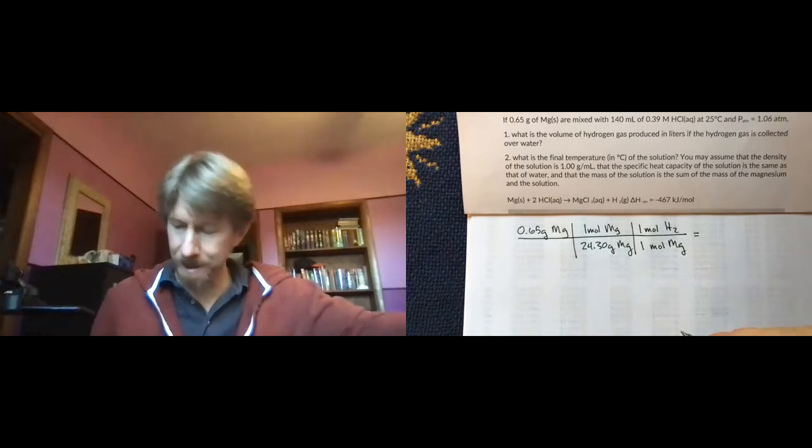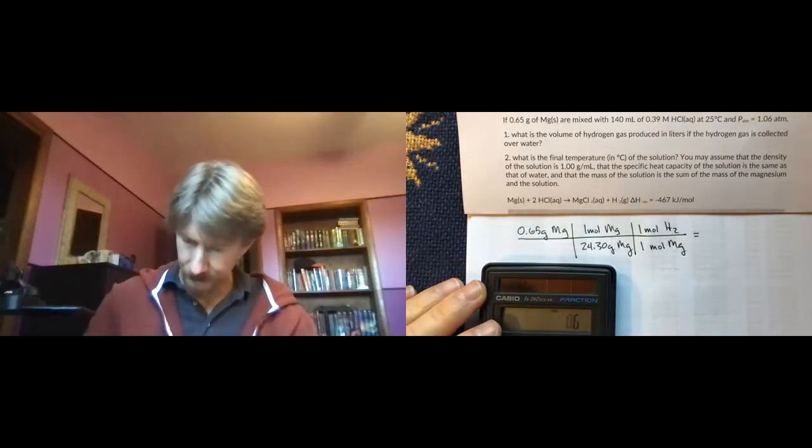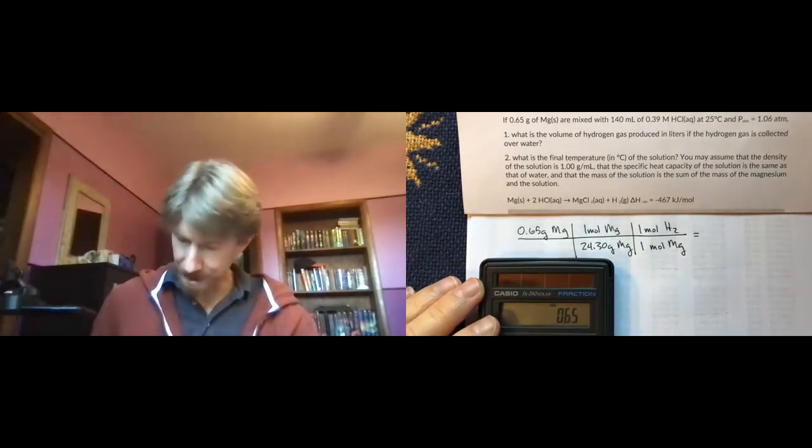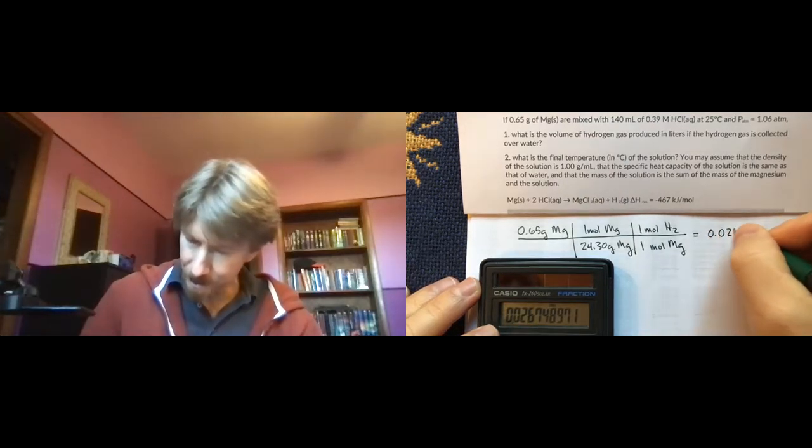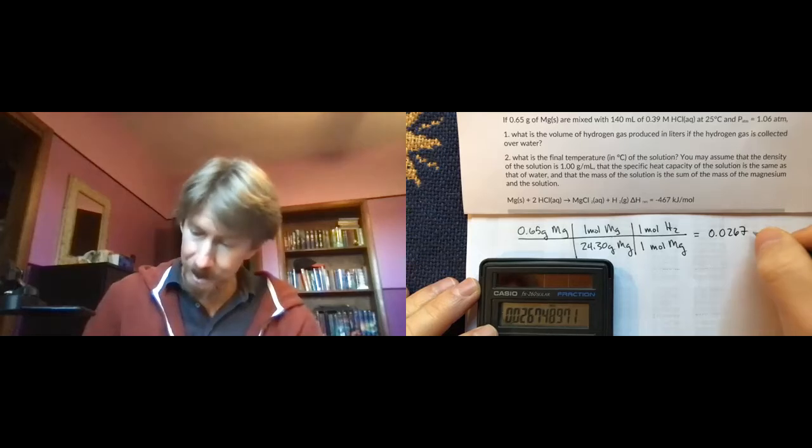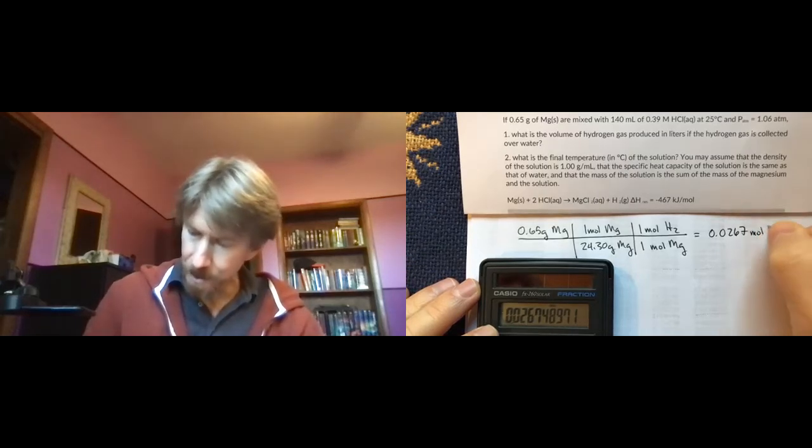And I got my calculator here. And my grams 0.65 divided by 24.30. And I get 0.0267 to three sig figs moles of hydrogen.